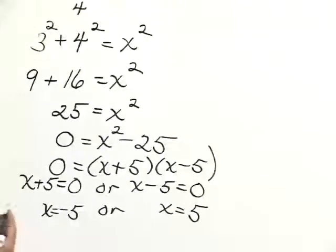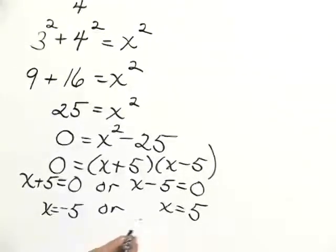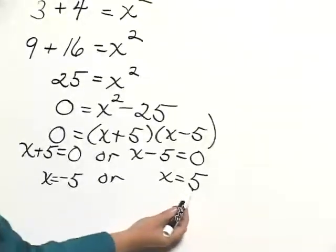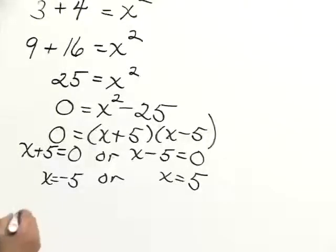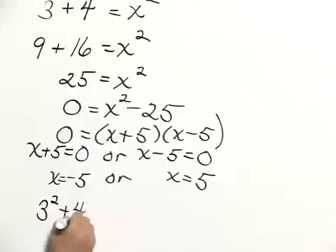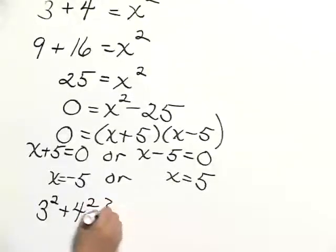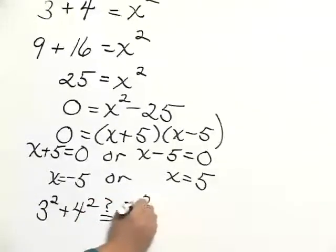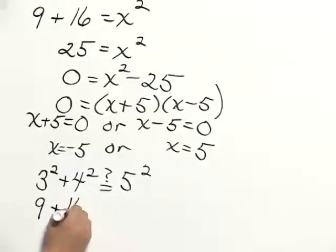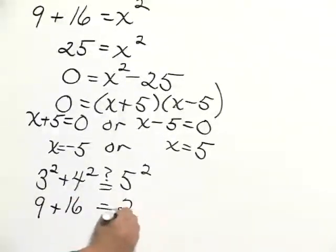Now since we're talking about a real problem with distances, we're not going to use the negative number. We're going to check our answer 5. If the hypotenuse is 5 feet, then we would have 3 squared plus 4 squared. And we check to see, does that equal 5 squared? Well, we have 9 plus 16, and that does equal 25, so our answer checks.